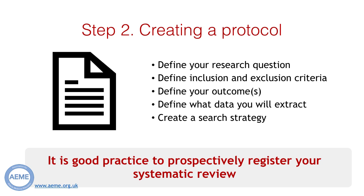Step two: create a protocol. Before starting a systematic review, create a protocol that outlines your research question, the types of studies you want to include or exclude from your review, what outcomes you plan to look at, and what data you are aiming to extract. It is also useful to document your search strategy in the protocol, such as which databases and search terms you will be using. The protocol then becomes a helpful tool to refer back to during the process. It is good practice to register your systematic review protocol with databases such as Prospero, a database of prospective health-related systematic reviews. This helps to reduce publication bias by comparing the finalised review to the initial protocol, and allows you to check whether your research question has already been answered or whether others are planning a similar review.